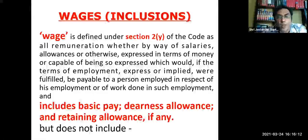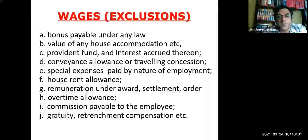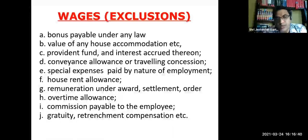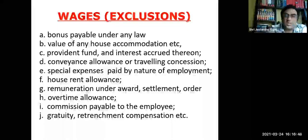The definition of wages under Section 2 of the code broadly includes basic pay, dearness allowance, and a retaining allowance if any. It excludes the following categories: bonus, value of house accommodation, provident fund, conveyance allowance, special expenses, house rent allowance, remuneration under any award or settlement, overtime allowance, commission payable to employee, gratuity, retrenchment compensation, etc.